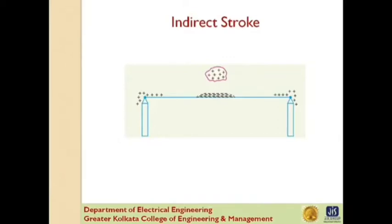Indirect stroke results from the electrostatic induced charge on the conductor due to the presence of a charged cloud. A positively charged cloud above the line induces a negative charge on the line by electrostatic induction. This negative charge will be only on that portion of the line directly under the cloud, and the portion of the line away from it will be positively charged. The induced positive charge leaks slowly to earth via the insulator. When the cloud discharges to earth or to another cloud, the negative charge on the wire is isolated as it cannot flow quickly to earth over the insulator. The result is that the negatively charged wave rushes along the line in both directions in the form of traveling waves. It is worthwhile to mention that the majority of surges in a transmission line are caused by indirect lightning strokes.